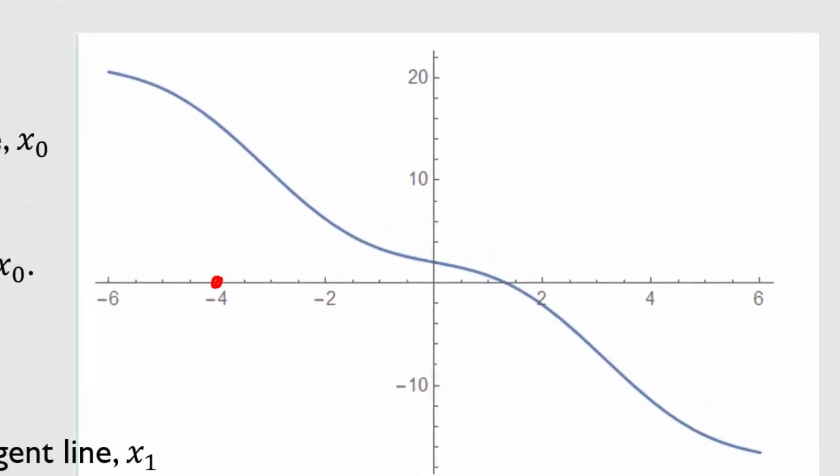All right so once we choose our starting value we then find the tangent line at that starting value. So I go up to my function up here and I calculate the tangent line. I can sketch the tangent line. It might look something like that.